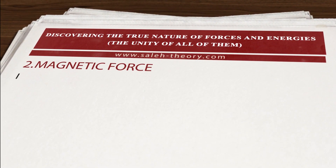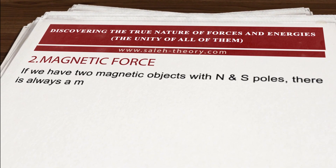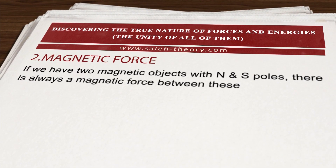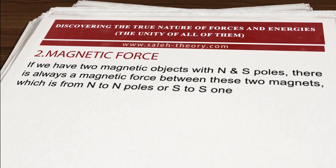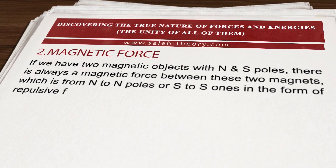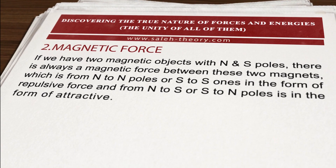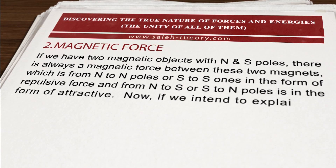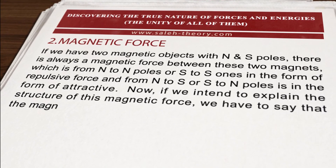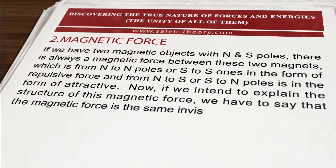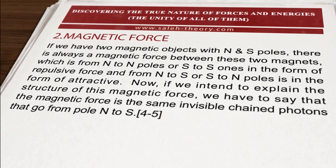Magnetic Force: If we have two magnetic objects with N and S poles, there is always a magnetic force between these two magnets — repulsive from N to N or S to S poles, and attractive from N to S or S to N poles. The magnetic force can be described as invisible chained photons that travel from pole N to pole S.